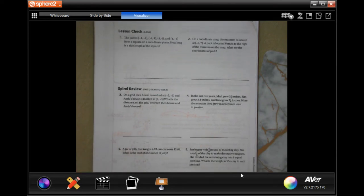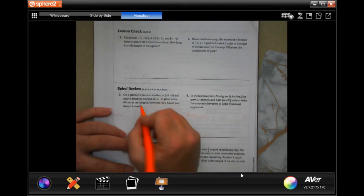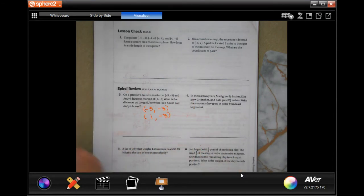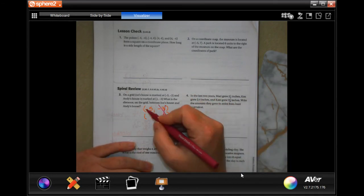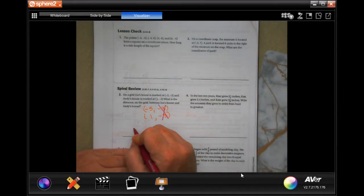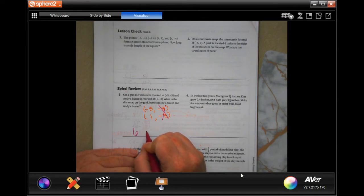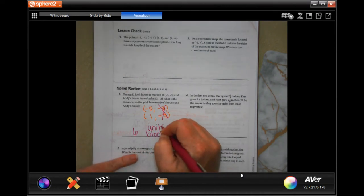And it says, on a grid, Joe's house is marked at negative 5, negative 3. Andy's house is marked at 1, negative 3. What's the difference? So, negative 5, negative 3. 1, negative 3. What's the difference? Those 3, negative 3, the same. Negative 5, positive 1. Add them together. 6. And I guess we're going to just do blocks or units. Blocks or units.